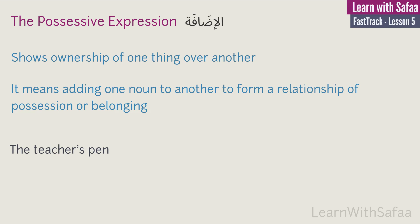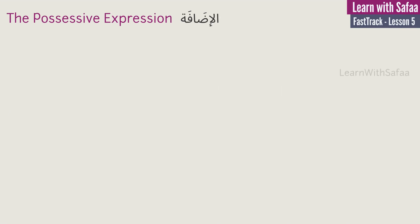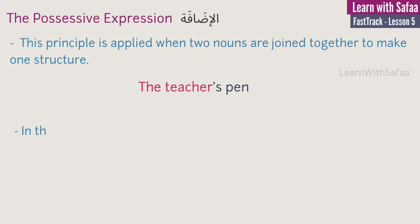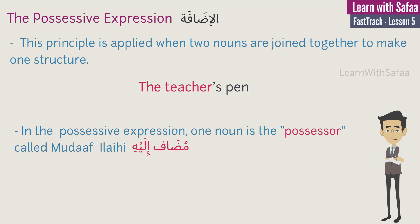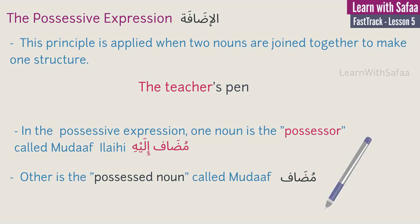Let's see another example: the student's book, which literally means the book of the student. The two nouns show the relationship between the student and the book. This principle is applied when two nouns are joined together to make one structure. One noun is the possessor, and the other noun is the possessed noun, called mudhaf-ilehi in Arabic.